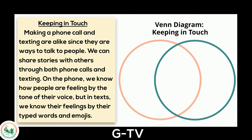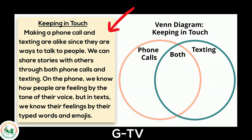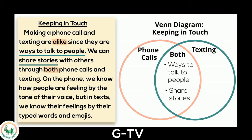Let's organize the information from the Keeping in Touch text by completing a Venn diagram. First, we label the diagram with our two topics: phone calls and texting. We only put information about phone calls on one side, and information about texting on the other. In the middle, where the circles overlap, we can write the word 'both.' The signal words 'alike' and 'both' are for comparing, so the information they connect with goes into the middle — ways to talk to people and share stories.